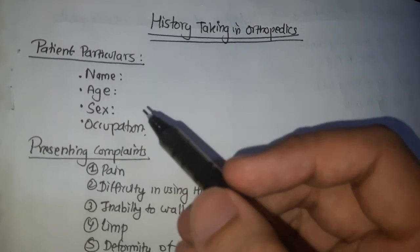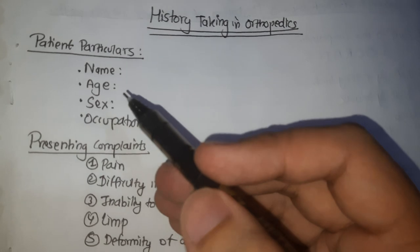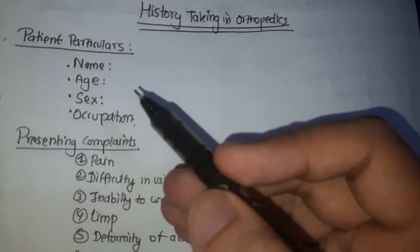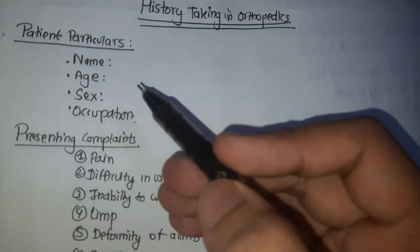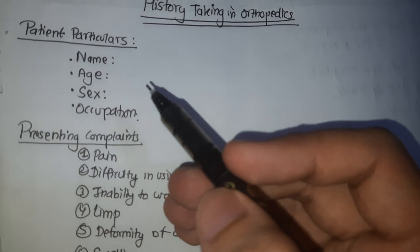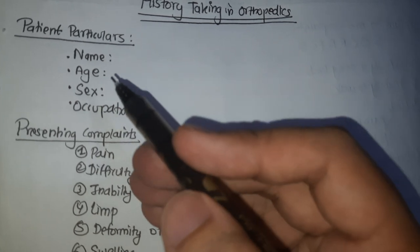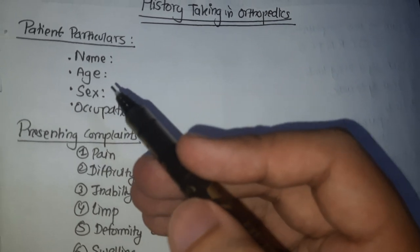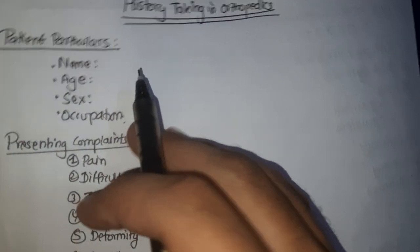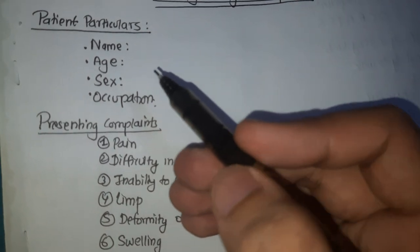The patient should be made comfortable and there should be good understanding between the patient and the doctor. After that, we note the patient particulars — name and age. Age has its own significance; there are some fractures more common in children and others more common in adults or elderly. By knowing the age, we can think about the possible injury or disease.